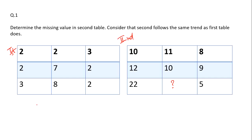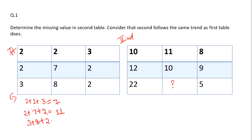It totally depends on practice — the more you practice, the more you will be able to solve the questions. There is no theoretical concept you have to follow, so just practice. Now, if you notice the trend the first table is following: 2 + 2 + 3 = 7, then 2 + 7 + 2 = 11, then 3 + 8 + 2 = 13. They are prime numbers in sequence — that is the trend the first table is following.